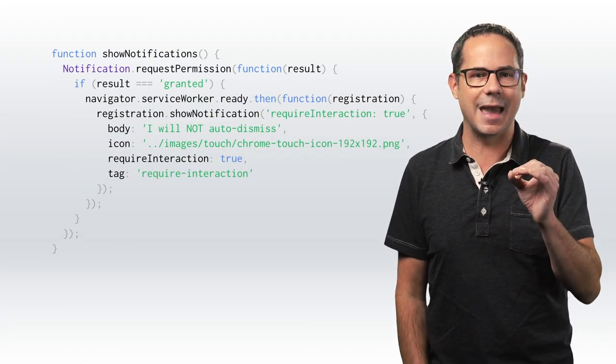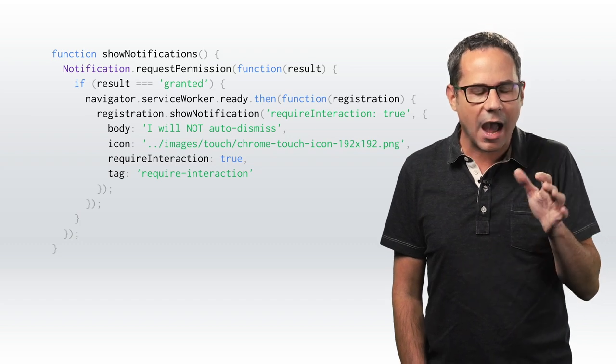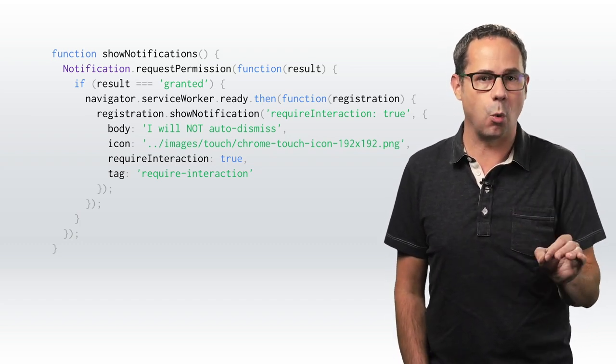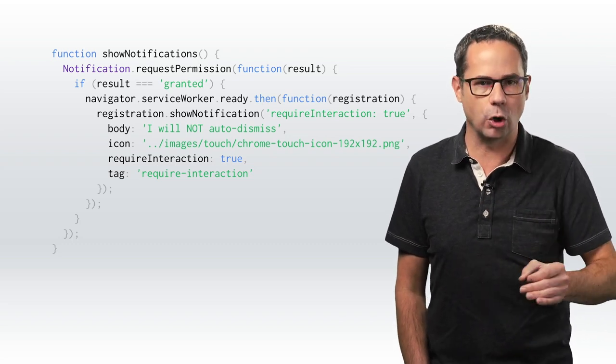Push notifications powered by service workers have been available since Chrome 42. We've heard from users and developers alike that on desktop, notifications would remain visible until the user dismissed them. Chrome 47 now automatically dismisses desktop notifications after about 20 seconds, unless you set require interaction to true when calling show notification.